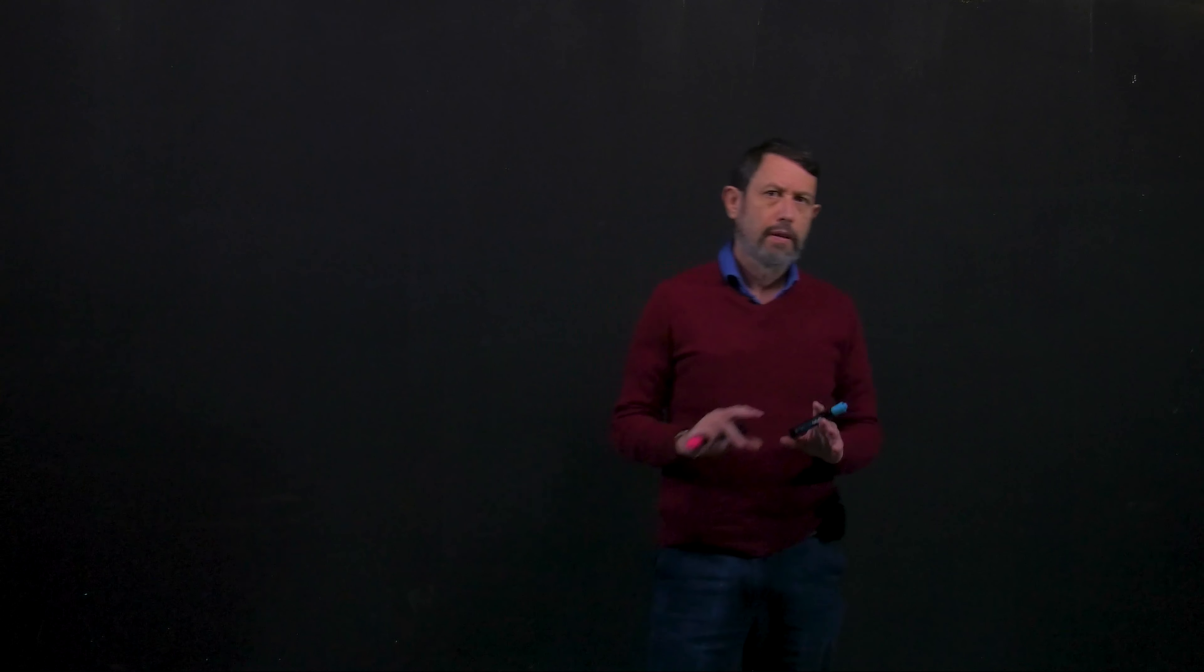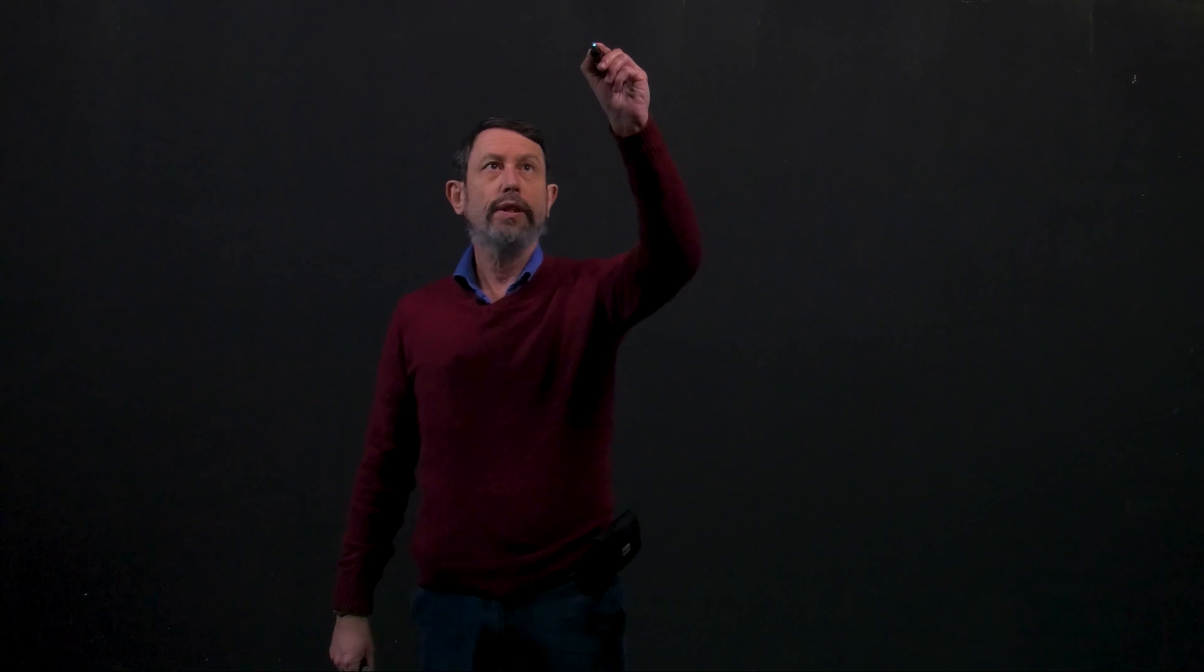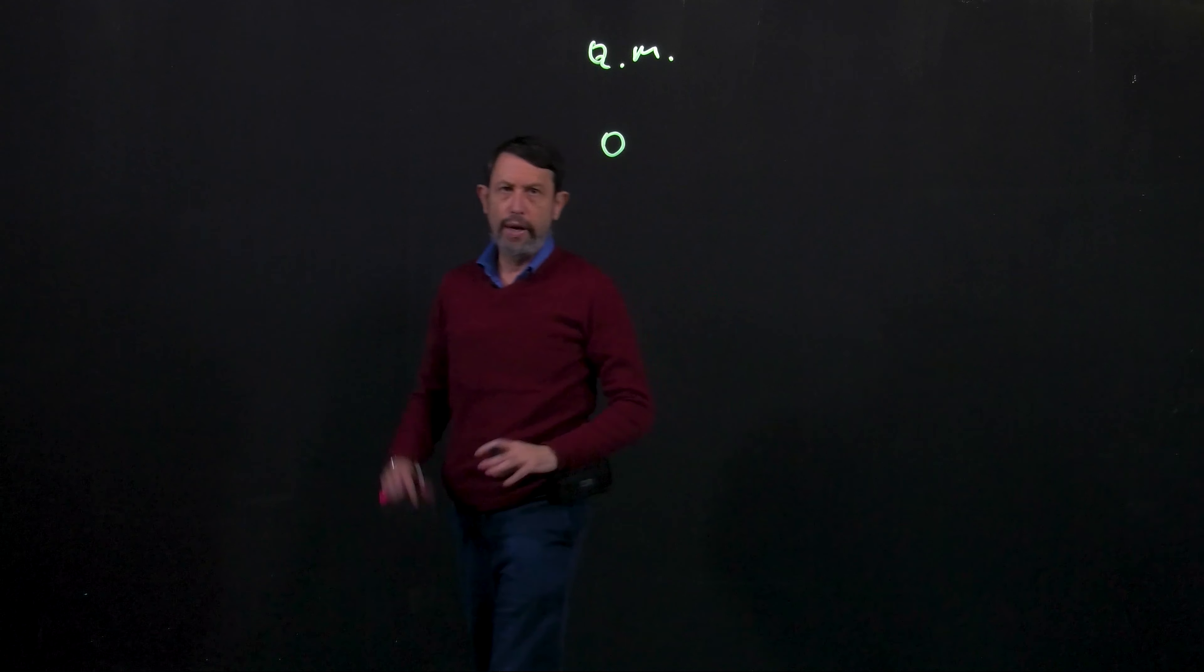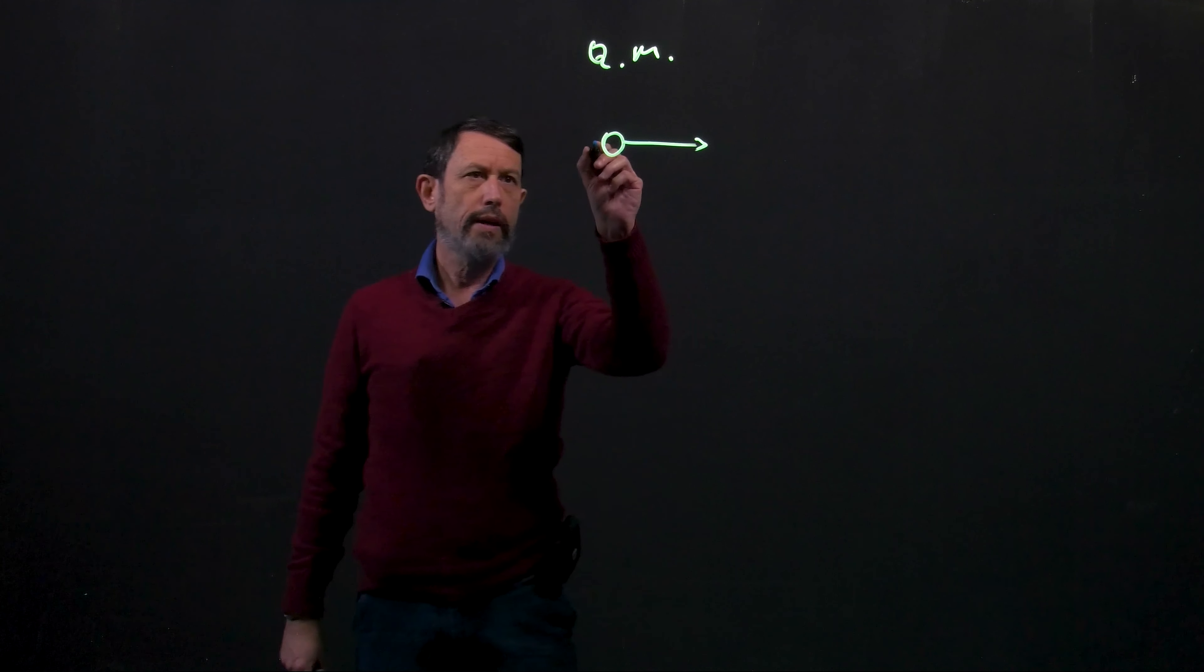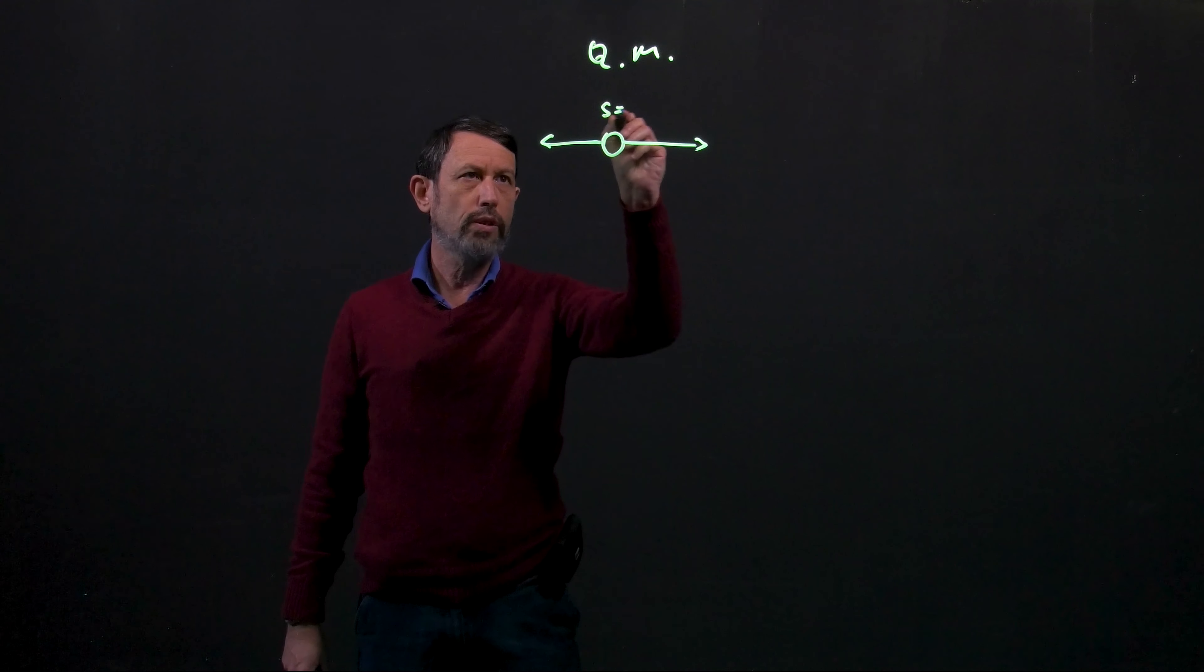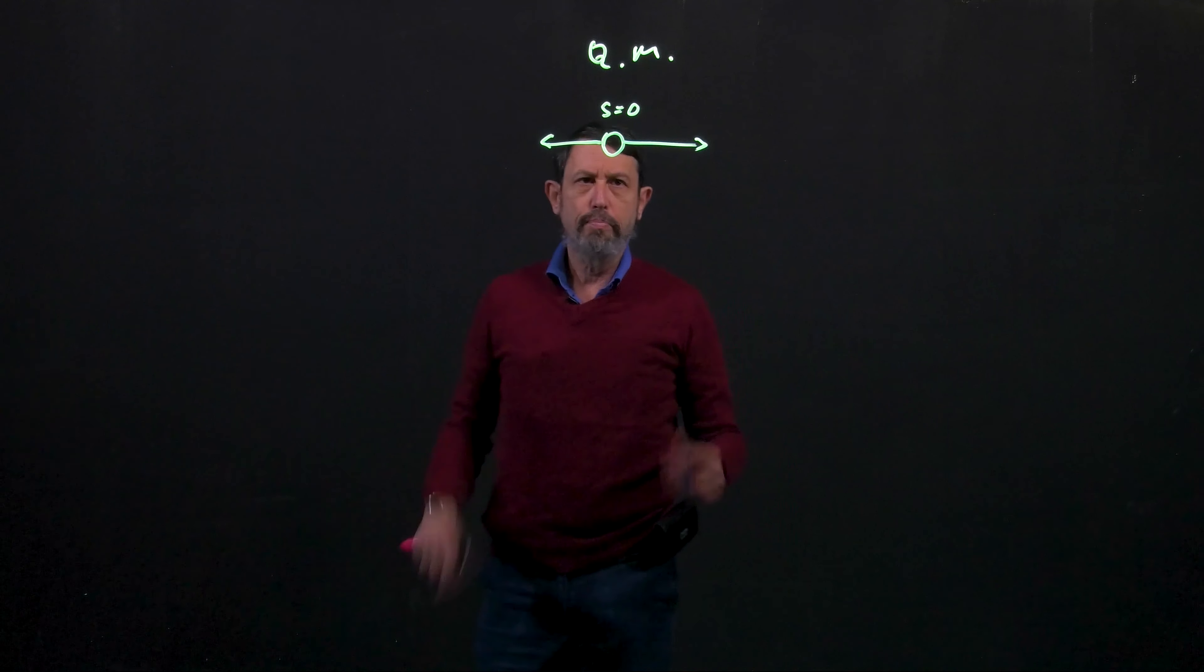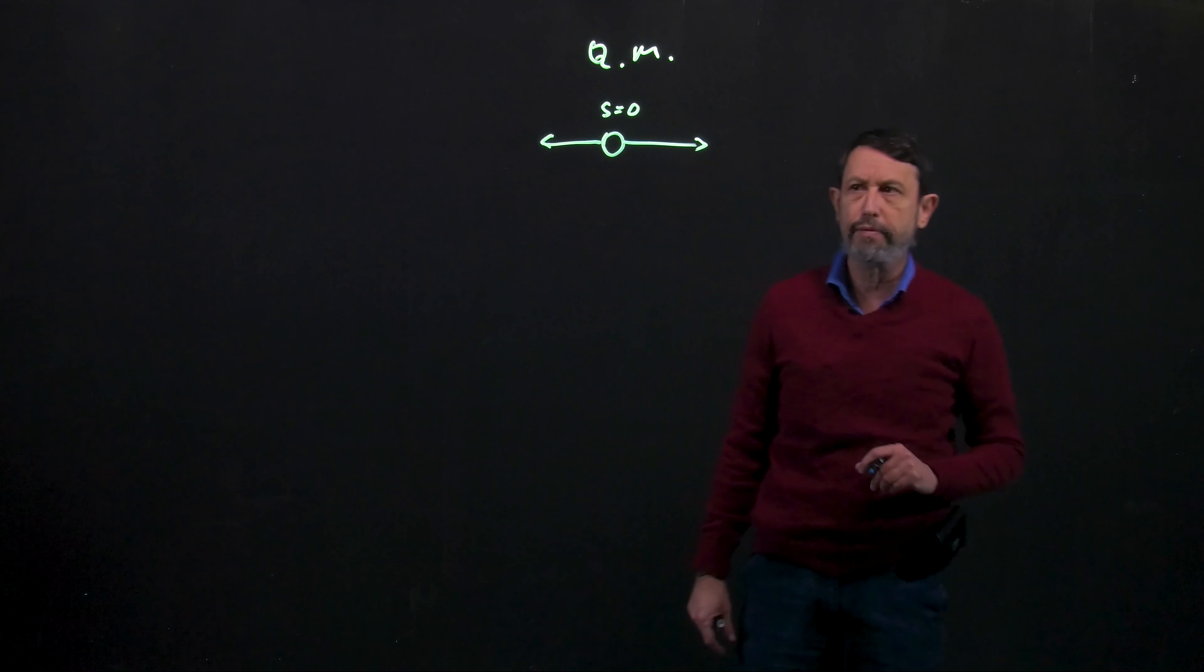in which you had at the beginning of the experiment some particle that breaks up into two particles, one going to the right and one to the left. At the beginning the spin was equal zero and the sum of the spin of the two particles has to be zero, but each of them is a spin half particle.